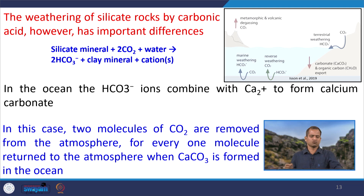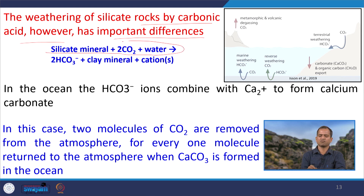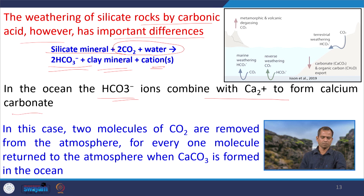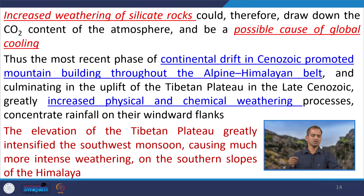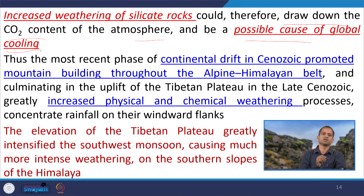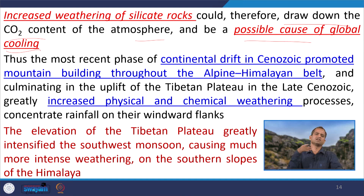However, the weathering of silicate rocks is different. Silicate minerals react with carbonic acid — CO2 and water — forming bicarbonate, clay minerals, and some cations. In the ocean, bicarbonate ions combine with calcium to form calcium carbonate. In this case, two molecules of CO2 are removed from the atmosphere for every one molecule returned when CaCO3 is formed in the ocean. So the amount of CO2 is reduced from the atmosphere, meaning it is a cooling phase. Increased weathering of silicate rock therefore draws down the CO2 content of the atmosphere and is a possible cause of global cooling. This demonstrates how rock distribution influences climate change.